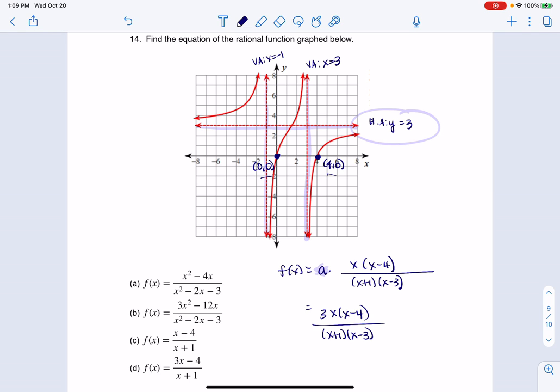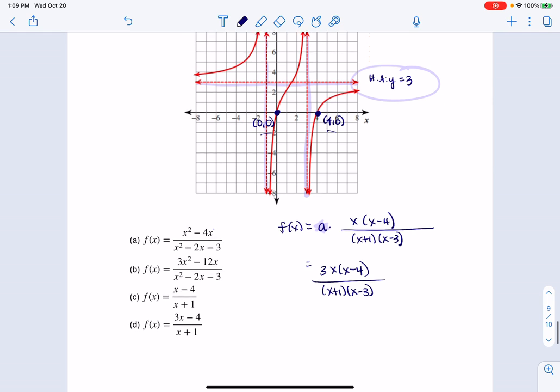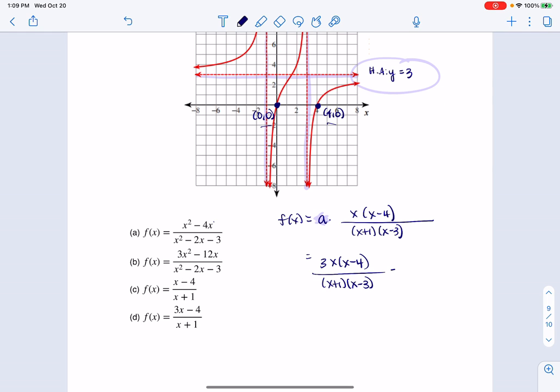And at this point, it looks like the answers here have all been multiplied out. They're not in factored form, which is fine. I'm just going to finish this out. So this is going to be 3x squared minus 12x. And my denominator, if I foil x squared, minus 3x plus x is minus 2x minus 3.